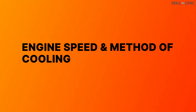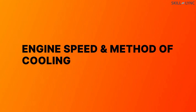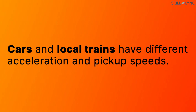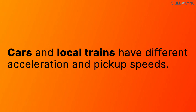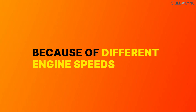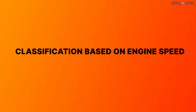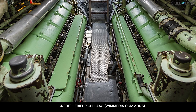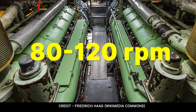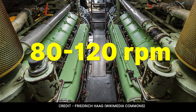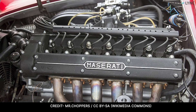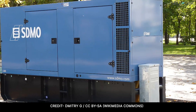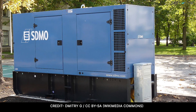Engine speed and method of cooling also form the basis of classification of IC engines. When you travel in cars and local trains, you must have noticed that the pickup speed and acceleration of both vehicles are different. This is because of the different speeds of engines used in trains and cars. According to engine speed, IC engines are classified as slow speed, medium speed, and high speed engines. Slow speed engines have a speed of 80 to 120 RPM and are used in marine engines, while high-speed engines can be found in high-performance vehicles. Medium speed engines find their application in cars as well as in generators.